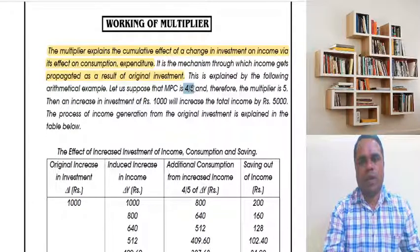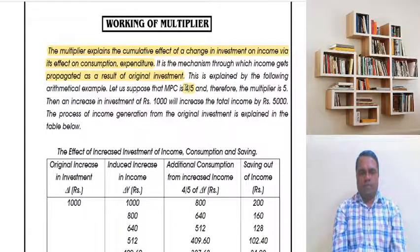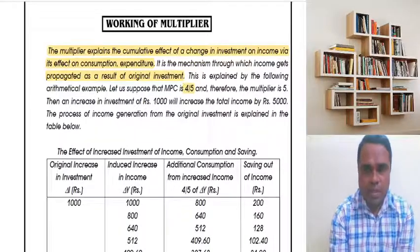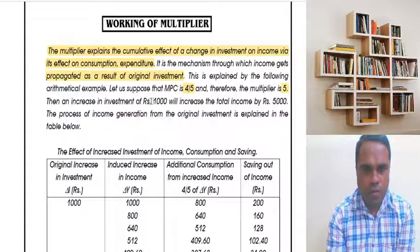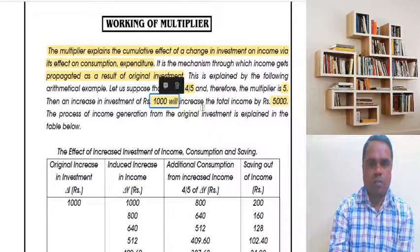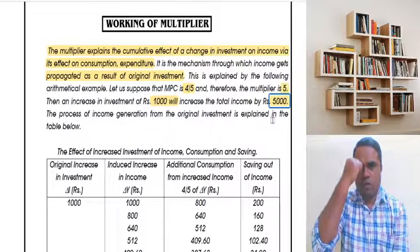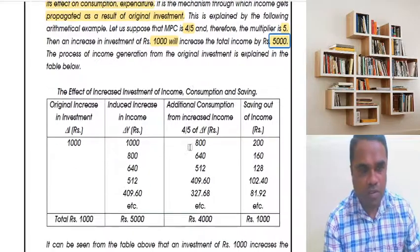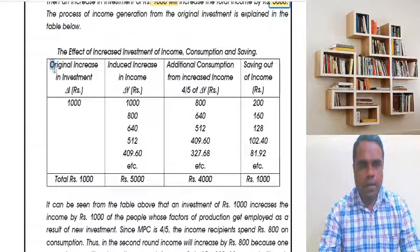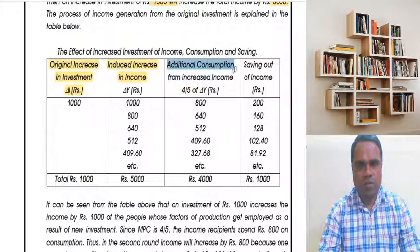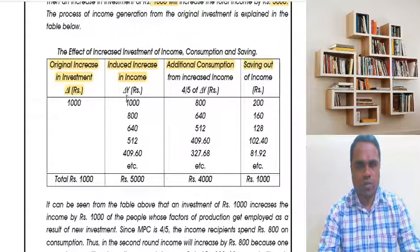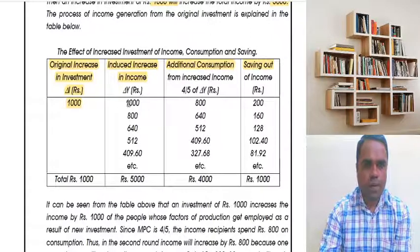Assume marginal propensity to consume is 4/5 (four-fifths), and therefore the multiplier value is 5. If the investment is 1,000 rupees, total income is going to rise by 5,000 rupees — the original investment multiplied by five becomes five thousand. Let's trace the income generation process through a table.